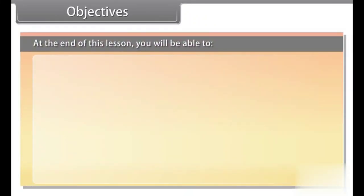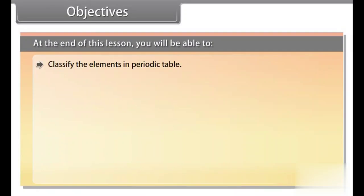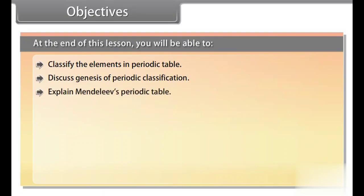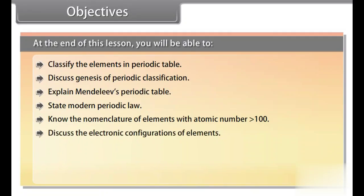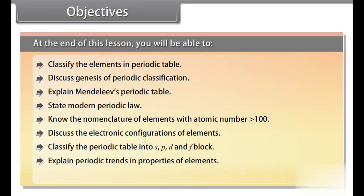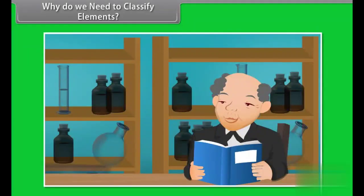At the end of this lesson, you will be able to: classify the elements in the periodic table; discuss the genesis of periodic classification; explain Mendeleev's periodic table; state the modern periodic law; know the nomenclature of elements with atomic number greater than 100; discuss the electronic configurations of elements; and classify the periodic table into S, P, D, and F blocks.